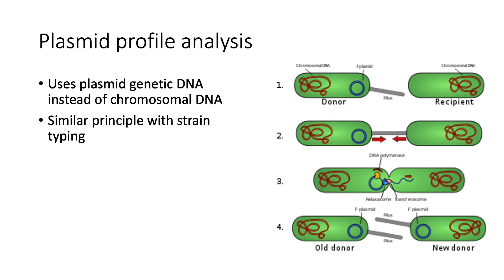Next, we have plasmid profile analysis. This uses a similar principle to strain typing, but instead of chromosomal DNA, it uses plasmid genetic DNA. The plasmid is a different genetic material from your chromosomal DNA, and it is unique because it can easily be transferred from one cell to another, even between species. Plasmids usually contain antibiotic resistance genes, so the study of plasmids is of great importance.